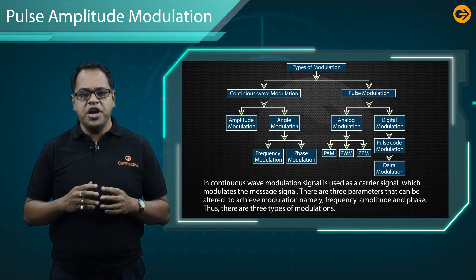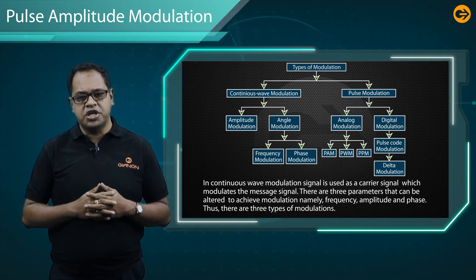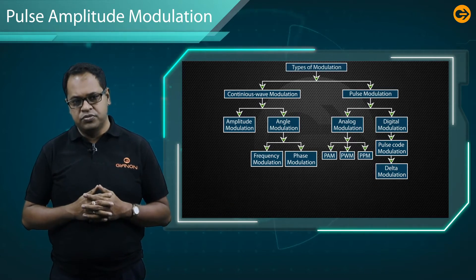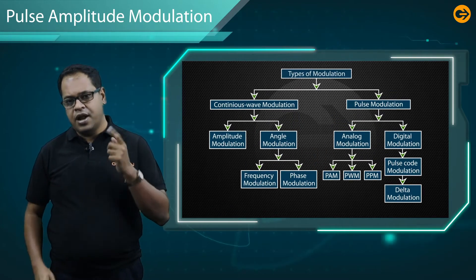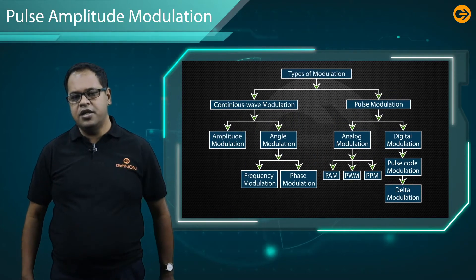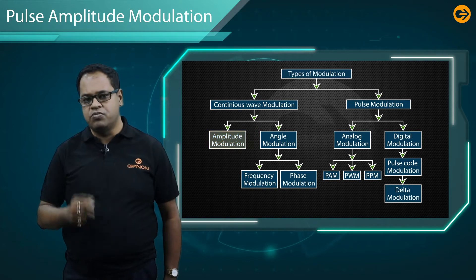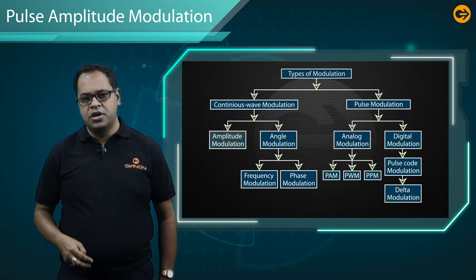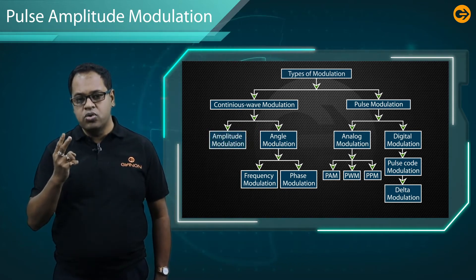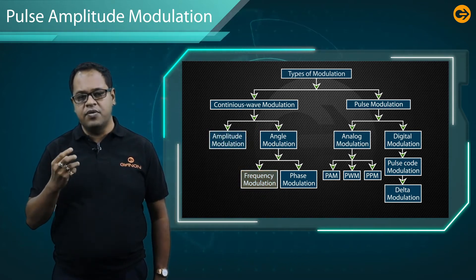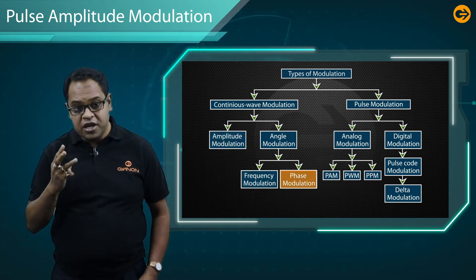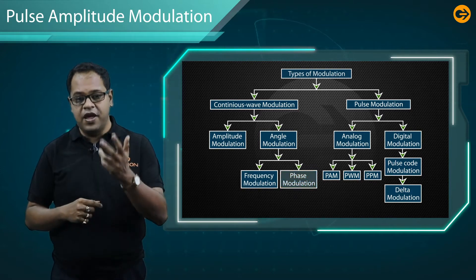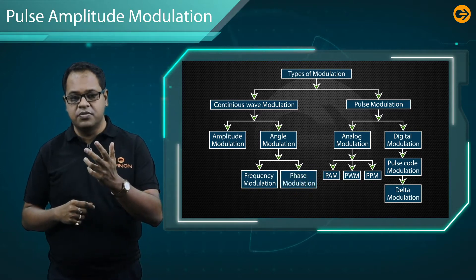There are three types of modulation. Number one is Amplitude Modulation. Number two is Frequency Modulation. And number three is Phase Modulation.